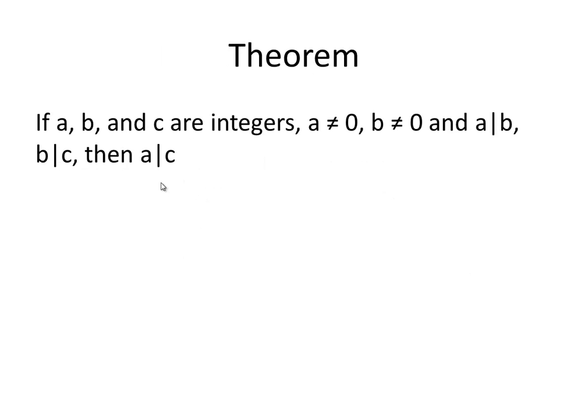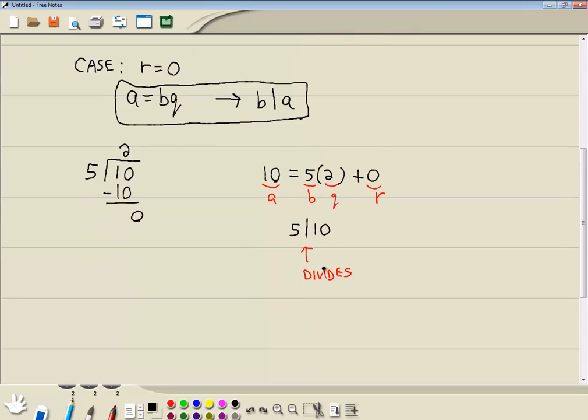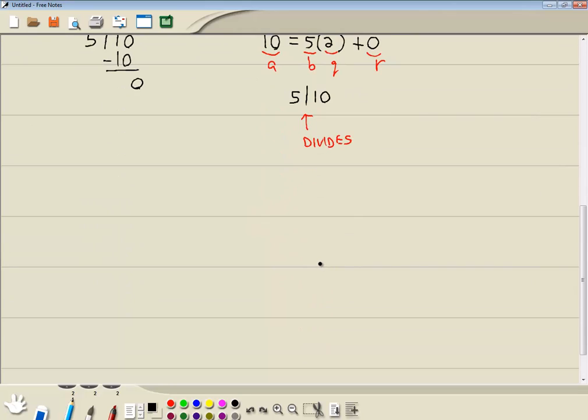Now we've got a theorem. It says if A, B, and C are integers, A cannot equal 0, B cannot equal 0. And if A divides B, B divides C, then A divides C. Well, let's think about what that's saying. If we have 3 divides 12, for example. So 3 goes into 12 evenly.